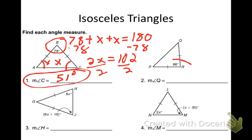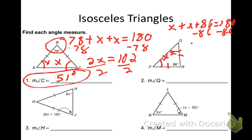Number 2: I'm given 86 degrees. This is an isosceles triangle, so the opposite angles are congruent. Setting up: x + x + 86 = 180. Subtracting 86 gives 2x = 94. Dividing by 2, I get angle Q to be 47 degrees.